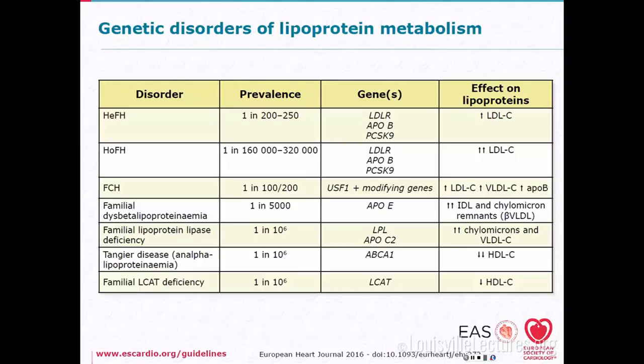Lipoprotein lipase deficiency is very rare, with a marked increase in chylomicrons. Tangier's disease is the absence of HDL — very low HDL levels — due to mutations in ABCA1, the transport protein that moves cholesterol out of the cell. Familial LCAT deficiency also causes very low HDL. These are rare conditions, but keep them in mind when you see someone with a very low HDL cholesterol level.